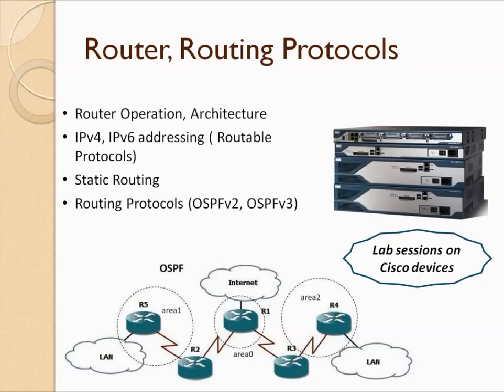Understanding the forwarding engine architecture gives you solid router product knowledge. Then I'll cover routable protocols — IPv4 and IPv6 — before moving to routing protocols, the heart of the router. We'll start with static routing and quickly realize how unscalable it is. Dynamic routing protocols allow routers to learn routes, communicate with each other, share databases, and propagate route additions and deletions automatically.